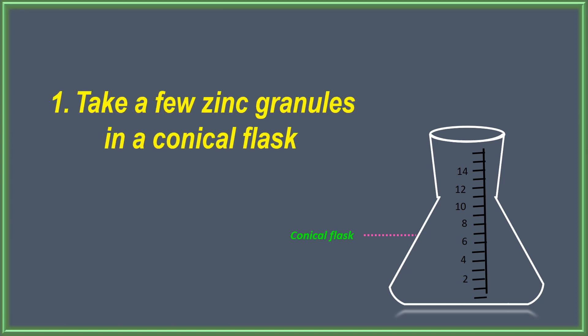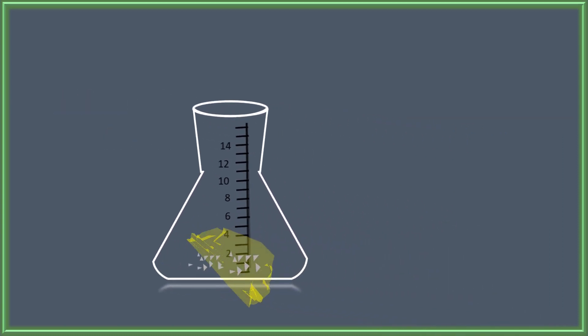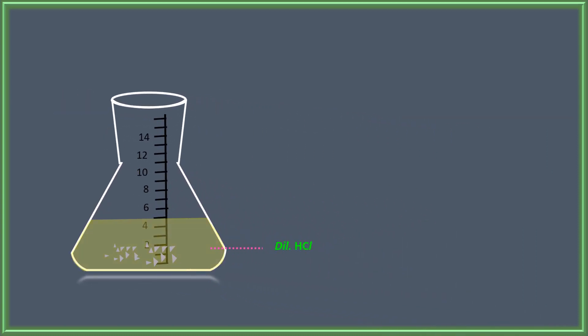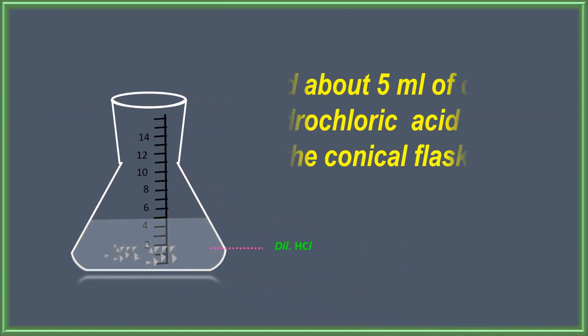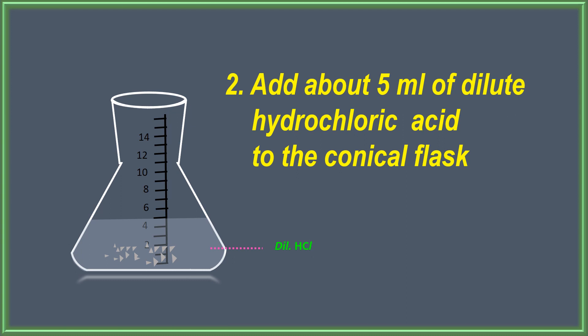Conical flask. Take a few zinc granules in a conical flask. Zinc granules, dilute HCl. Add about 5 ml of dilute HCl to the conical flask.